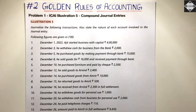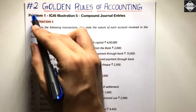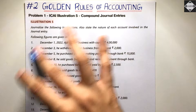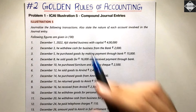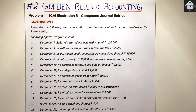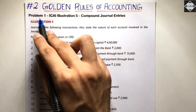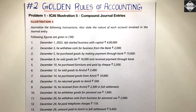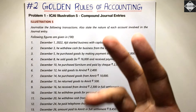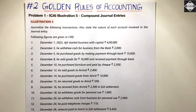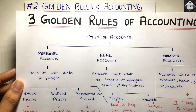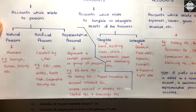Hi everyone, welcome back to Sahab Academy. Today in this second video of Golden Rules of Accounting, we are going to solve a question from CA Foundation study material, Illustration 5. Here we have 15 transactions and we have to record them by passing their journal entries according to the golden rules of accounting — personal account, real account, nominal account — and then the rules for them.